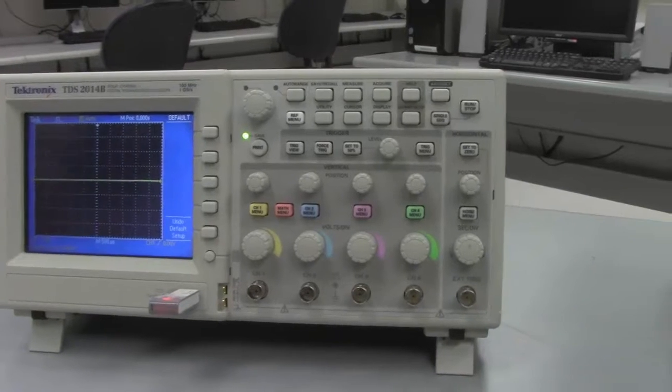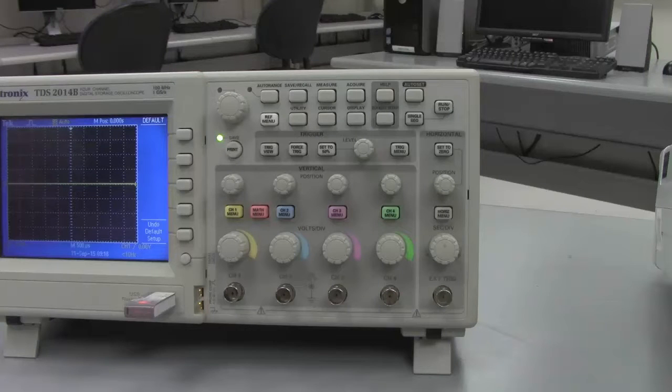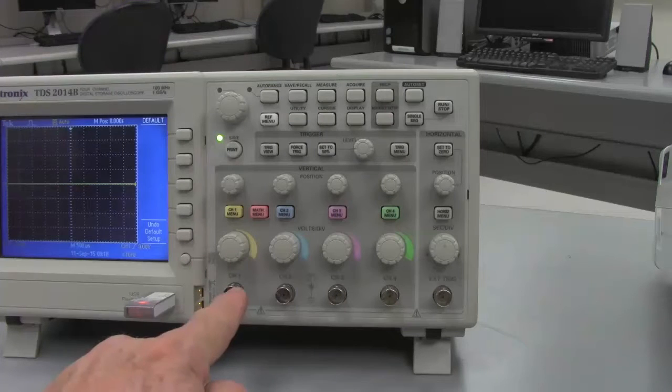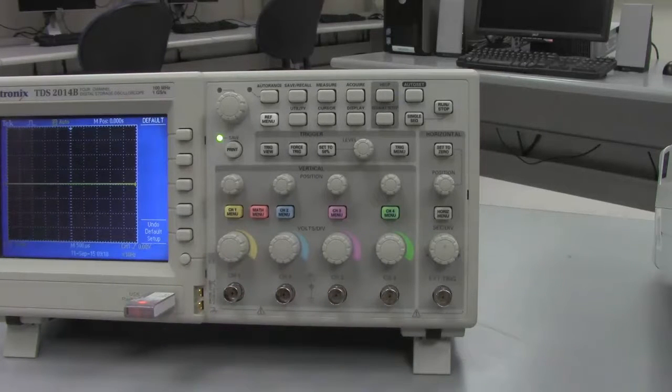Now, on this oscilloscope, you'll notice that there are four main different areas with buttons. There's lots of buttons. We mentioned before that this is a four-channel oscilloscope, and so there are four different places that you can connect your signal.